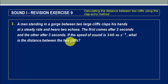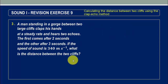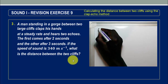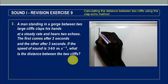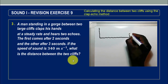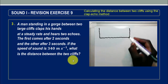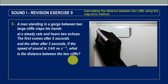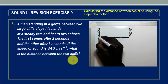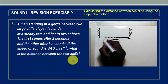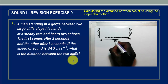In order to solve this question, let's put down this information in the form of a sketch. Using sketches is always a very good method because it assists you to understand the question. In this case, we can assume the two cliffs are separated — this is the second cliff over here, there's the first cliff — and the two cliffs are separated by some distance D.